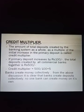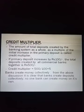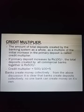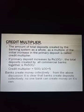Credit multiplier: the amount of total deposits created by the banking system as a whole as a multiple of the initial increase in the primary deposit is called the credit multiplier. The amount of total deposits created by all the commercial banks together, as a multiple of the initial increase in the primary deposit, is called credit multiplier. If the primary deposit increases by rupees 100 and the total deposits created by all commercial banks together is 500, then the credit multiplier is 500 divided by 100, which equals 5.